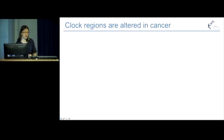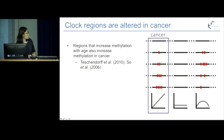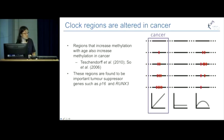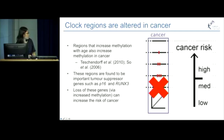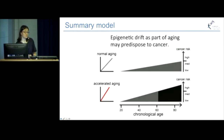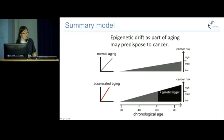Acceleration of the epigenetic clock is related to cancer and cancer outcomes. We also know that many of these clock regions in the genome also change in cancer, and are important tumor suppressor genes such as P16 and RUNX3. Increased methylation at these genes can cause them to shut down, and once those genes are shut down, you increase your risk of cancer. This has led researchers to build an accumulation model of how epigenetic drift as part of aging may predispose to cancer. With normal aging, you accumulate methylation drift as you age and may reach a high-risk threshold at age 90 — or perhaps not at all. With accelerated aging, you may reach that high-risk point earlier, and be at high risk for a longer period of your life. That methylation change itself, with additional genetic triggers, can then cause cancer initiation.